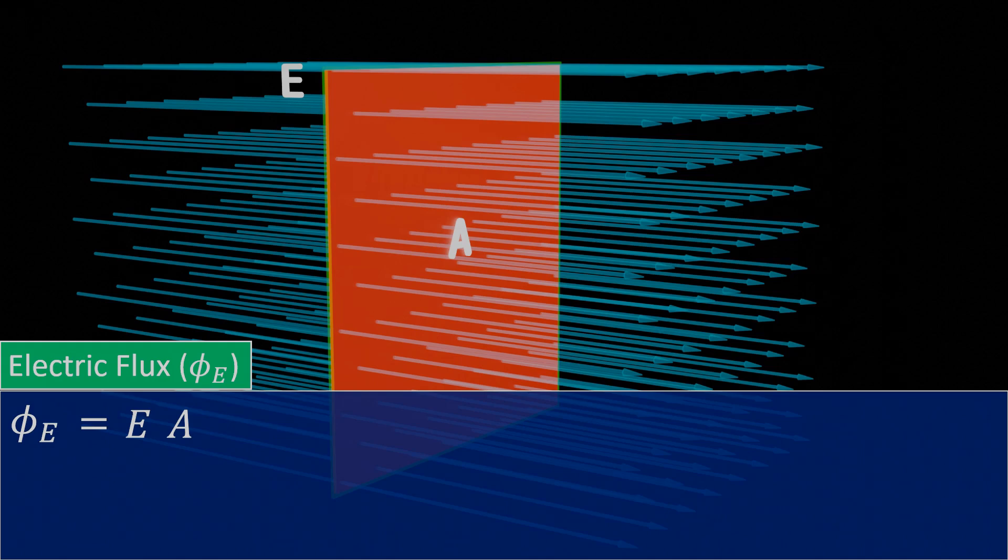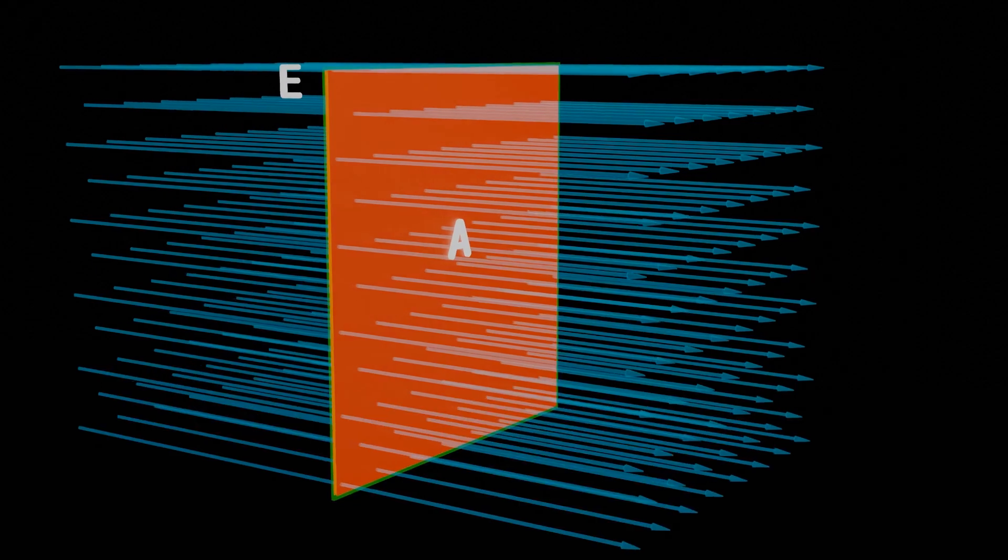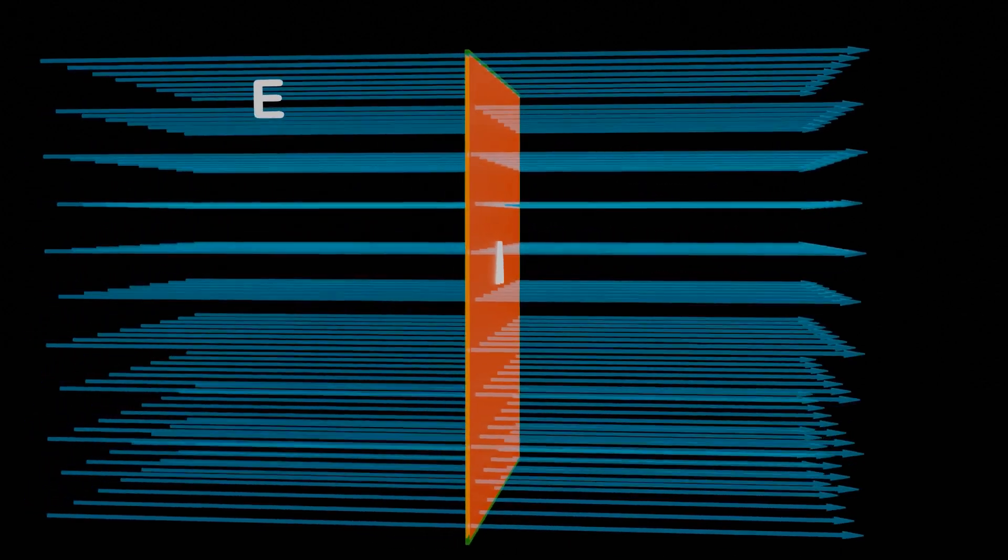With the help of electric flux, we can better understand the extent of the electric field's influence on the fixed area. Currently, we have the plane perpendicular to the electric field, so the maximum possible electric field lines are passing through the area.